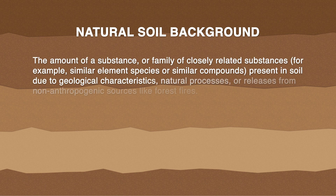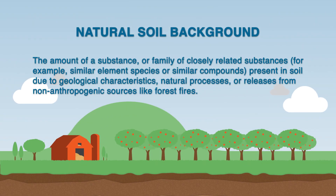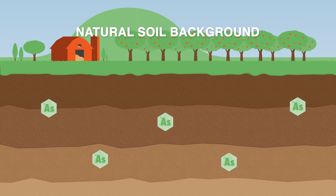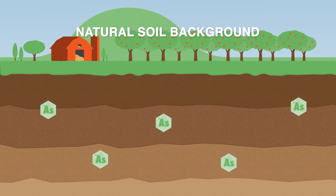Natural soil background has been defined in multiple federal and state guidance documents. As stated in Section 2.1, natural soil background is defined as the concentration of a substance or family of closely related substances — for example, similar element species or similar compounds — present in soil due to geological characteristics, natural processes, or releases from non-anthropogenic sources. For example, arsenic is naturally occurring in many soils throughout the United States from rock weathering and other natural processes. In this graphic, the naturally occurring arsenic is represented by the green icons.